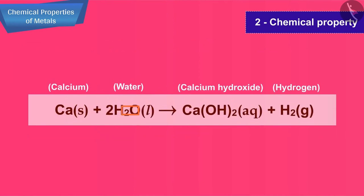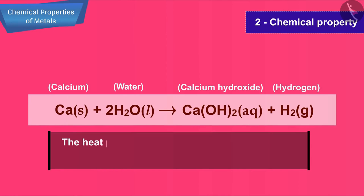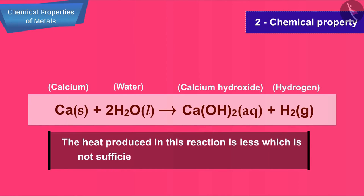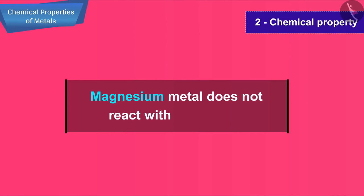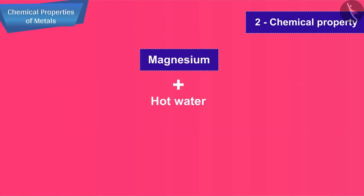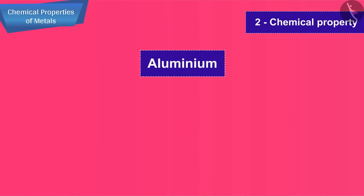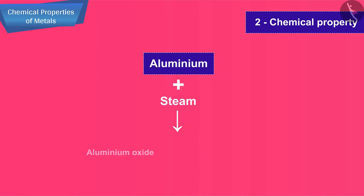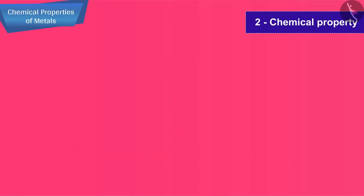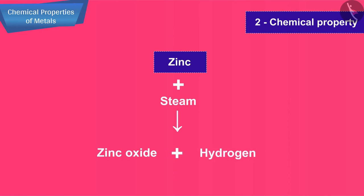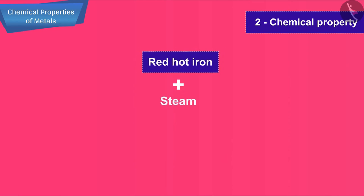Calcium reacts with cold water to form calcium hydroxide and hydrogen gas. The heat produced in this reaction is less, which is not sufficient for the hydrogen to catch fire. Magnesium metal does not react with cold water; it reacts with hot water to form magnesium hydroxide and hydrogen gas. Aluminium reacts with steam to form aluminium oxide and hydrogen gas. Zinc reacts with steam to form zinc oxide and hydrogen gas. Red hot iron reacts with steam to form iron oxide and hydrogen gas.